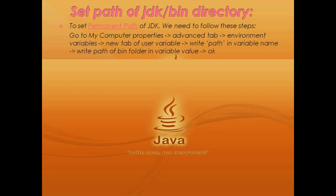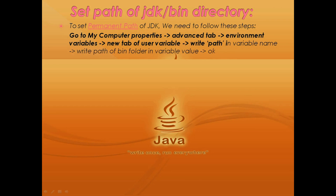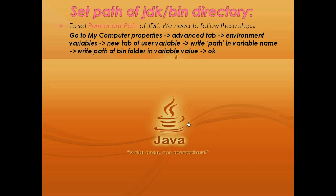If we want to set the permanent path of JDK, we need to follow these steps. Go to My Computer Properties, then the Advanced tab, then Environment Variables. In the new tab of User Variables, write 'path' in the variable name and write the path of the bin folder in the variable value, then click OK. For better understanding, watch in this video how to set the permanent path of JDK.